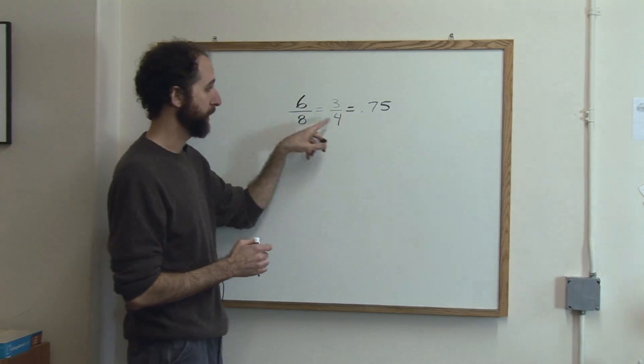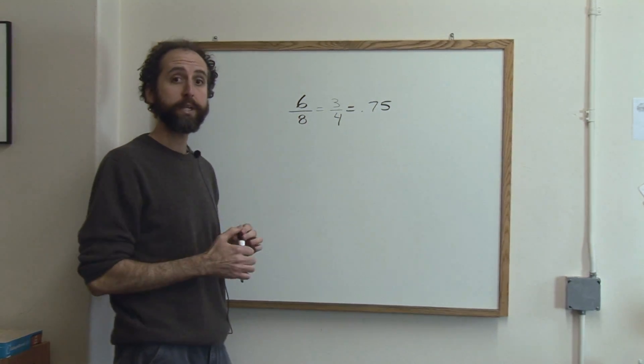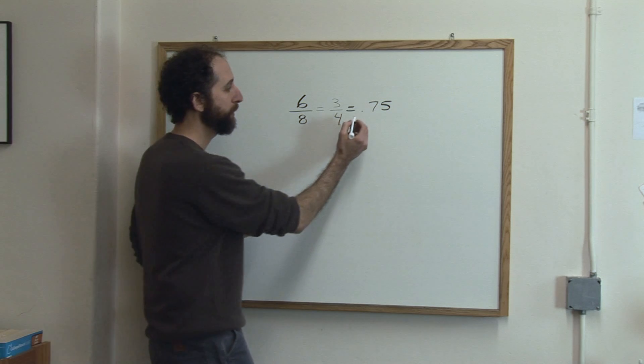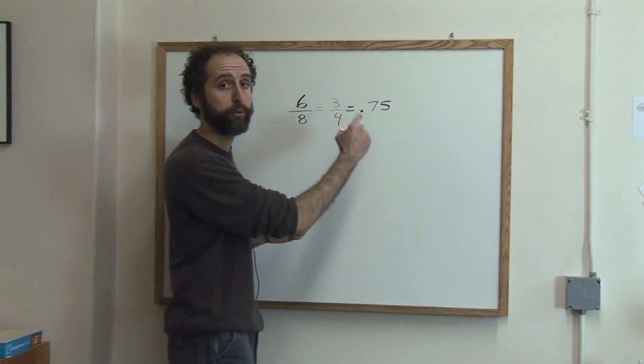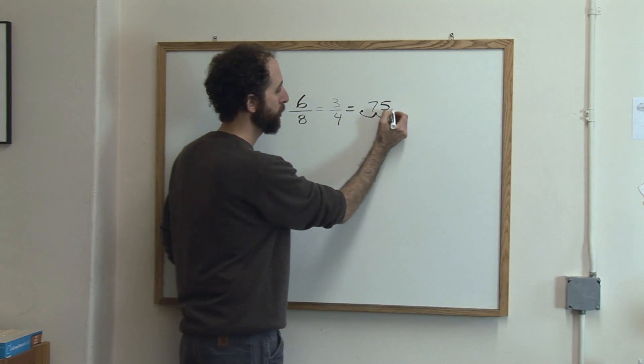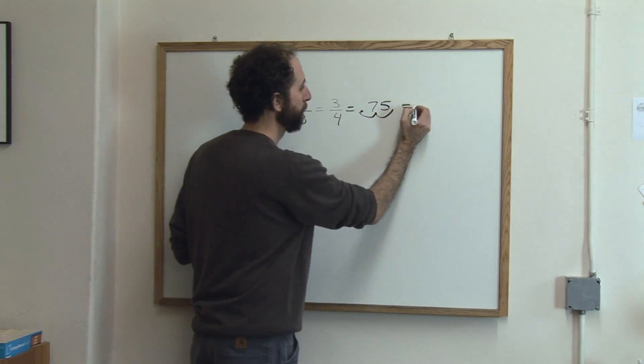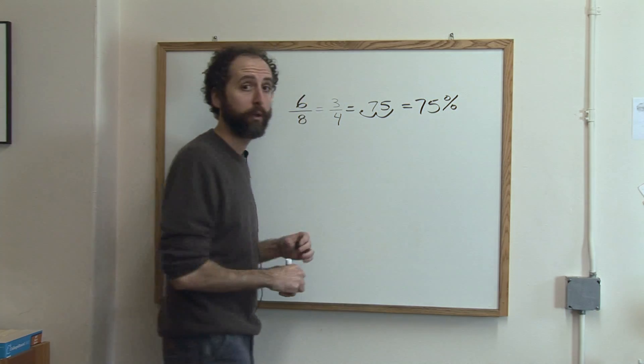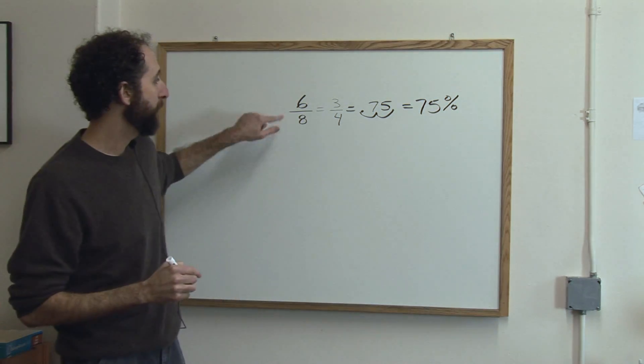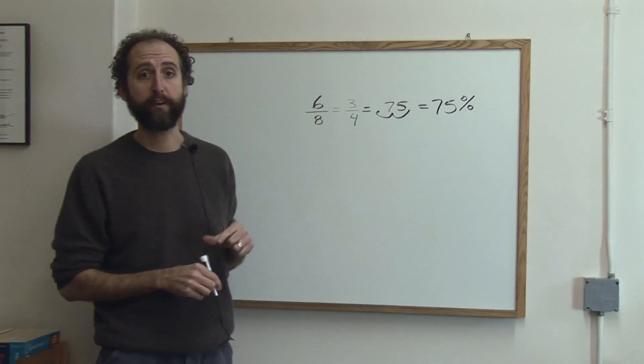So that's the decimal for these fractions. To turn a decimal into a percent, you just move the decimal point over two spots - one, two. So 0.75 is 75%. If you got 6 out of 8 on a quiz, that would be 75%.